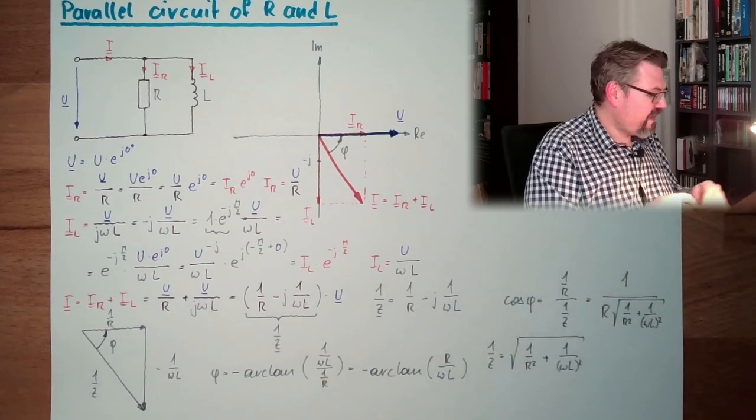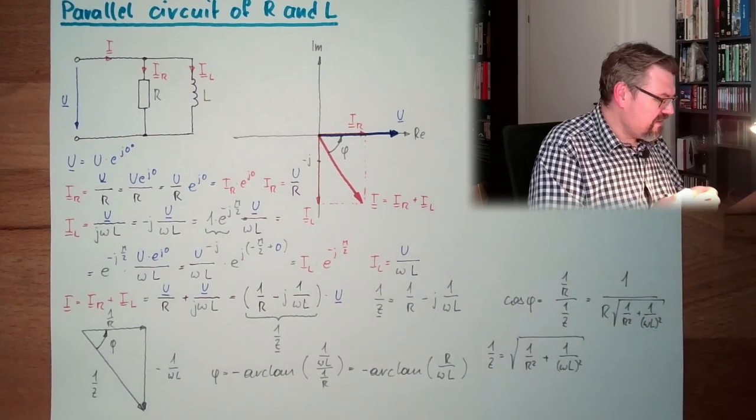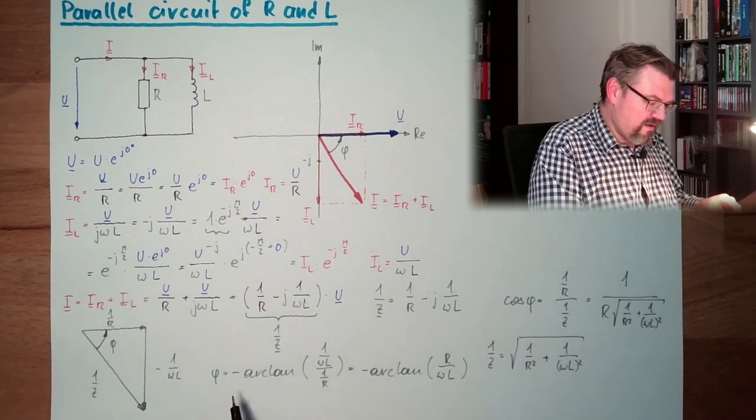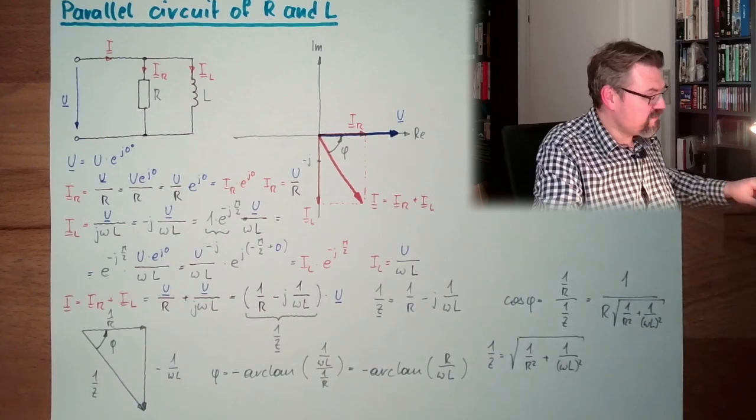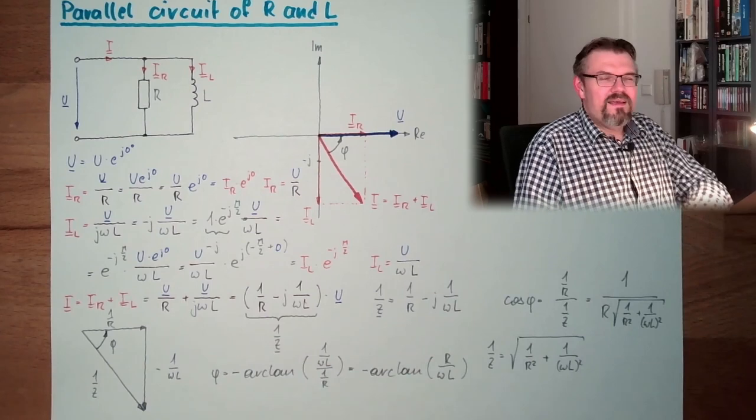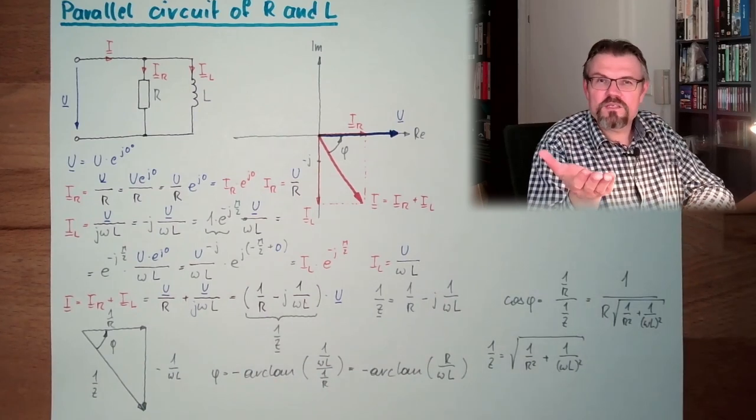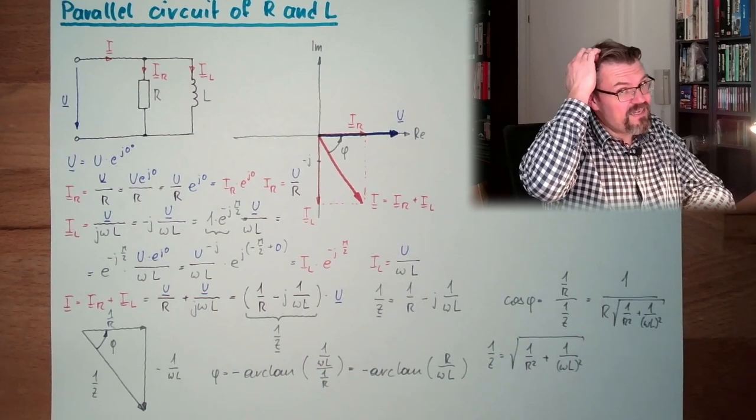Not that easy, right? Especially this thing here is tricky. You have to use this minus here, because actually it's the reverse value. If you calculate this, and the worst thing which is happening is that your angle is wrong.